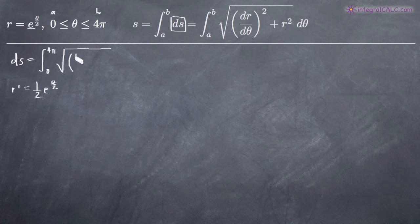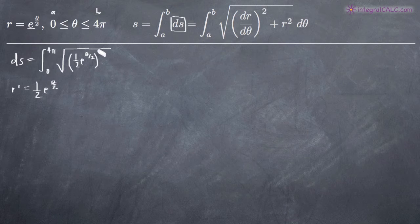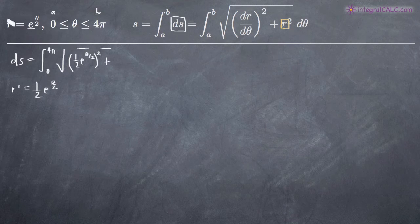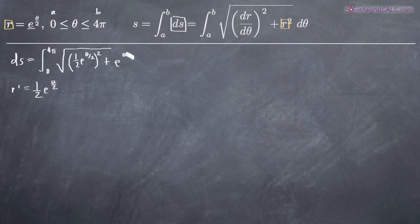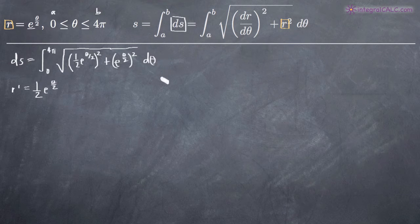So let's go ahead and plug that in. So one half e to the theta over two — and according to our formula, we're going to square that. And then we add to that r squared. And r, of course, is defined by our original equation for r, so we'll end up with e to the theta over two. We're going to square that as well. This is all going to be under our square root sign, and then we put dθ out here.